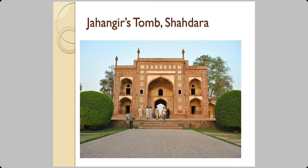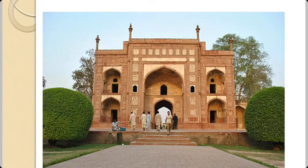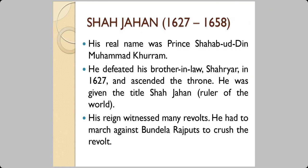This is Jahangir's tomb in Shahdara. Now I will talk about Shah Jahan, who ruled from 1627 until 1658. His real name was Prince Shahabuddin Muhammad Khurram. He was Jahangir's son. When Noor Jahan and Jahangir tried to promote Noor Jahan's brother Shahariyaar to the throne, Shah Jahan was not happy, feeling the throne belonged to him. So he defeated Shahariyaar in 1627, ascended the throne, and was given the title Shahajan — meaning ruler of the world.